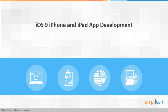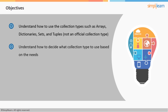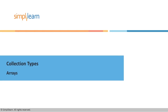Welcome to iOS 9 iPhone and iPad app development, lesson three: Swift 2.0 collection types. In this section we're going to take a look at the different collection types in Swift and understand how to use them. We're going to be talking about arrays, dictionaries, sets, and while not an official collection type, we'll also include tuples. By the time we're done you'll understand how to decide what collection type is right based on your data's needs.